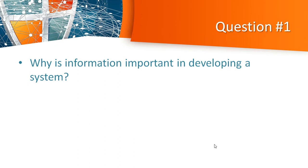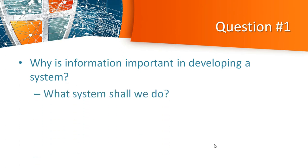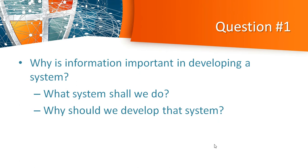Why is information important in developing a system? Information is very important in developing a system because it serves as a foundation on what system you are going to develop and on why you are going to develop the system. For example, our school needs a system that will allow students to get the certificate of grades automatically once they have done registering and requesting it online. That concept became the founding information on what system shall you build and why you should develop it. We'll know more about information's importance as we go further.